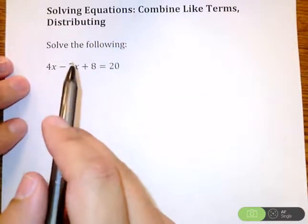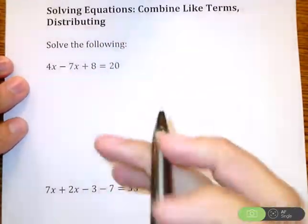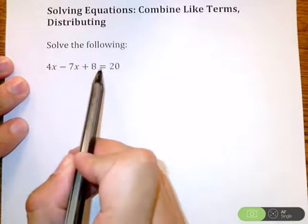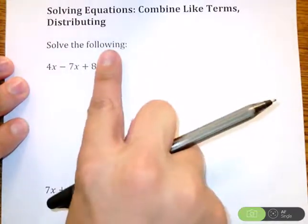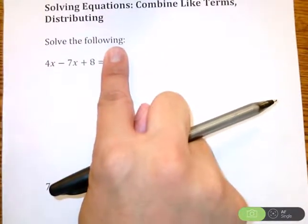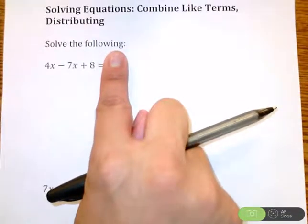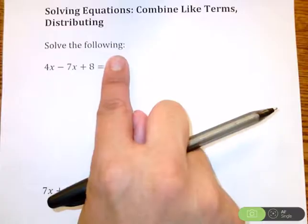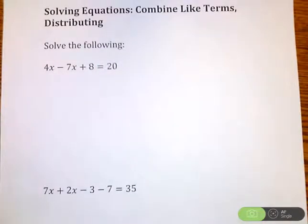Now again, the focus is on getting x alone. But if we look at this problem, this setup, right now I have 4x minus 7x plus 8 equals 20. If I look at the left side of this equals sign, things aren't exactly cleaned up yet. There's multiple x's there. I can condense that down before I even start to think about how I'm going to solve it and what piece to move.